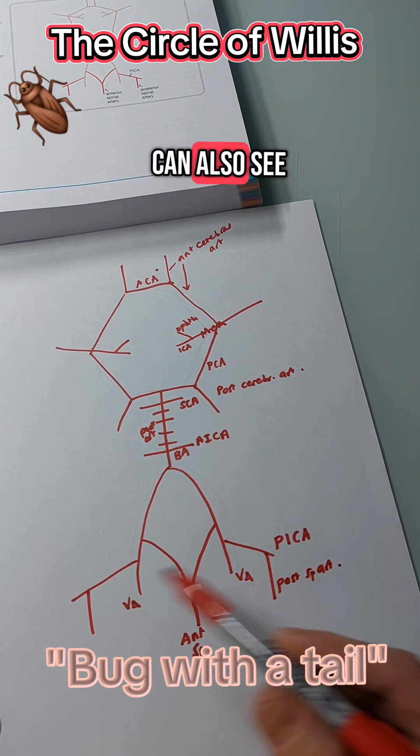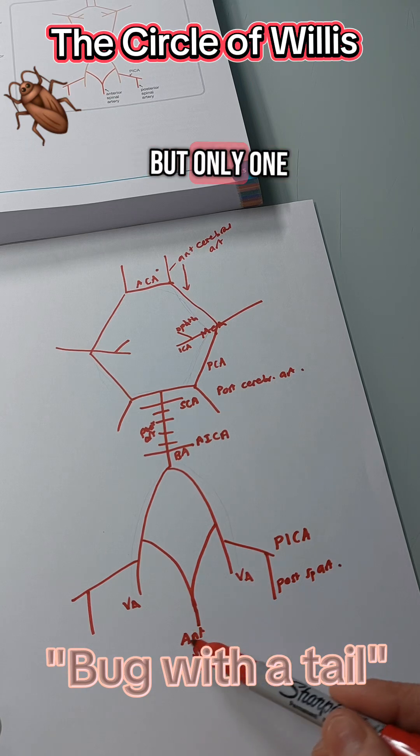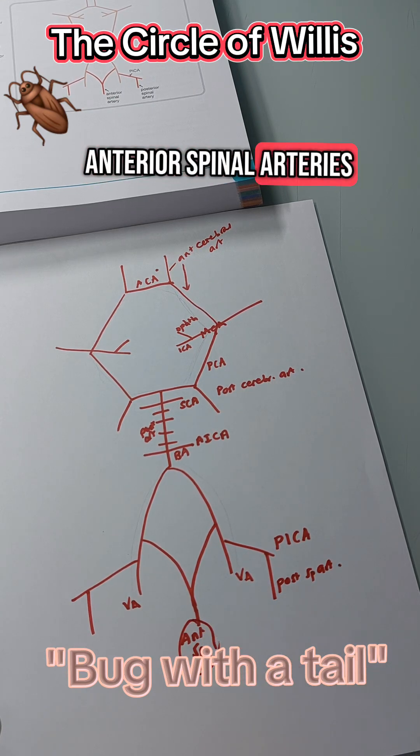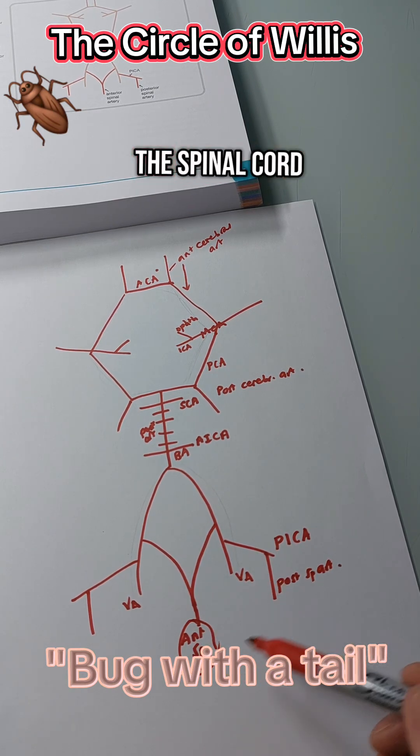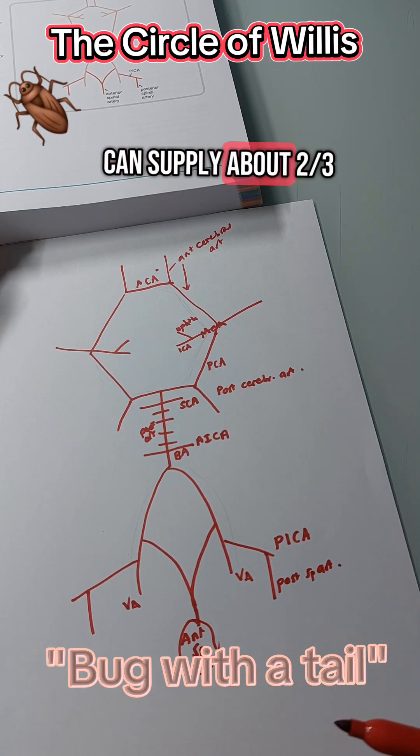And then you can also see from this that you have two posterior spinal arteries but only one anterior spinal artery. And the two posterior normally supply about a third of the spinal cord, and the anterior can supply about two thirds.